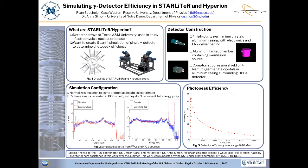Gamma rays with energy greater than two electron masses can also spontaneously produce electron-positron pairs, which then annihilate and release two more photons with an electron mass of energy each. Geant4 keeps track of how much energy is deposited in the crystals of the detector, and this data can be used to put together a spectrum of absorbed gamma ray energies.